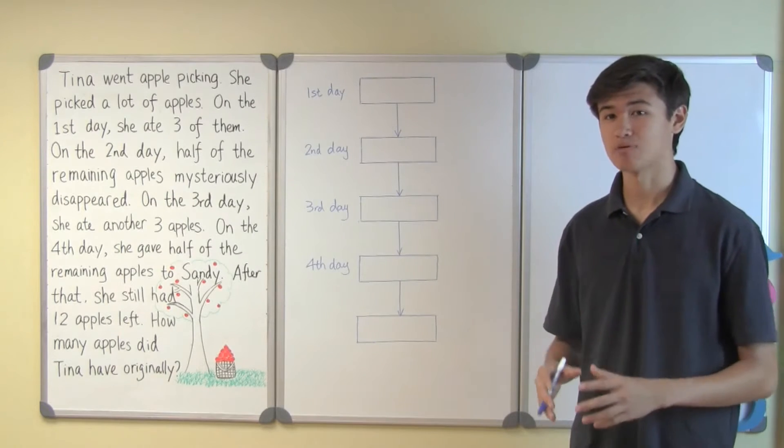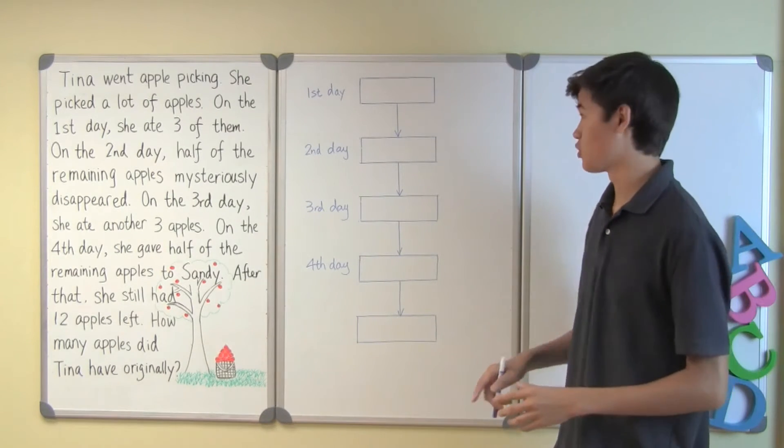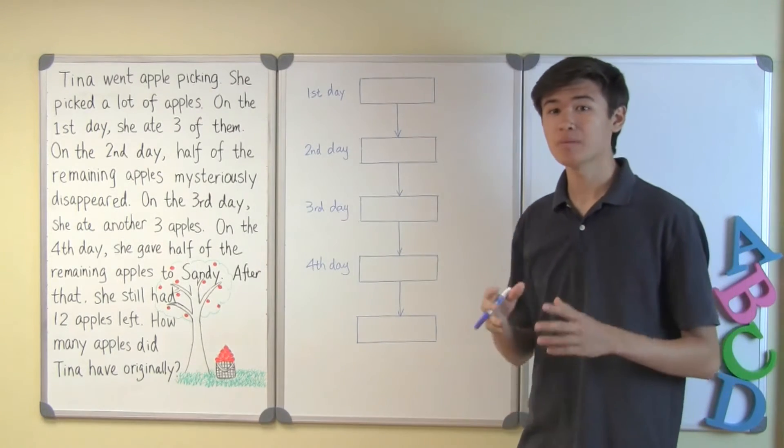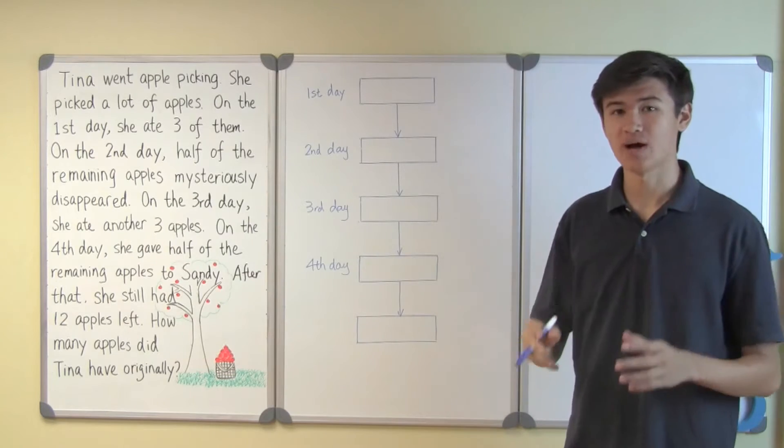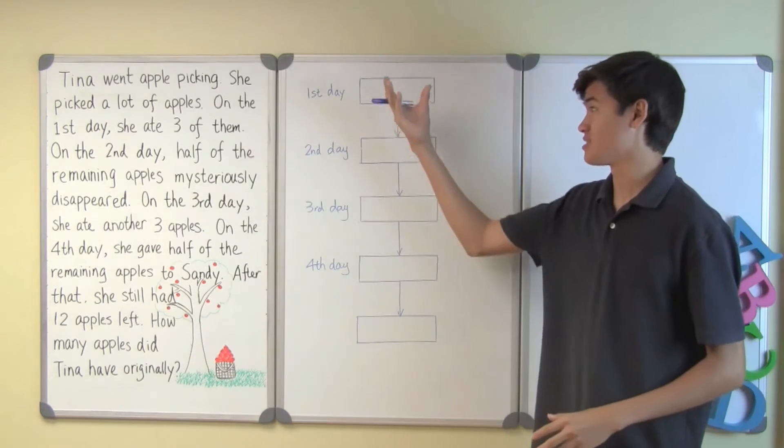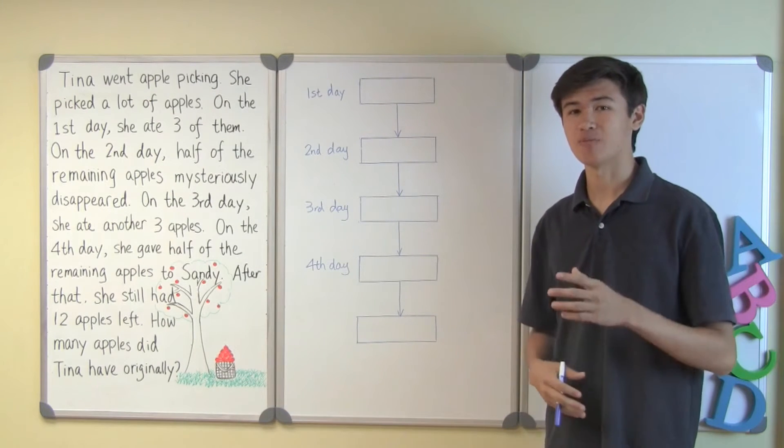Because we know how many apples remained after four days and we need to know how many apples there were to begin with, we need to work backwards. When working backwards we must go back through the question step by step, use a flow chart to represent the situation visually, and solve the problem using the information given.